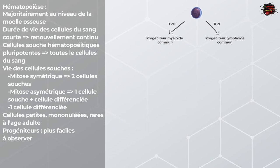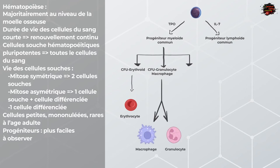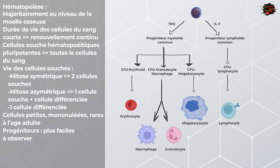Les progéniteurs communs, selon le stimulus et les facteurs de croissance auxquels sont exposées ces cellules, vont donner différents types de CFU. Il en existe 4 types. Tout d'abord, les CFU-E, Colony Forming Units Erythrocytes, aboutissant aux hématies. On aura les CFU-GM, pour Colony Forming Units Granulocyte Macrophages, lignée aboutissant vers les granulocytes, les monocytes et donc les macrophages. Les CFU-L, qui donneront les lymphocytes. Et enfin, les CFU-ME, qui donneront les mégakaryocytes.